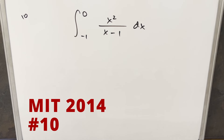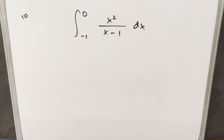We have here today another integral from the MIT Integration Bee 2014, problem 10. We have the integral from minus 1 to 0 of x squared over x minus 1 dx.